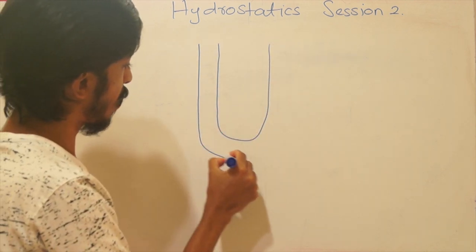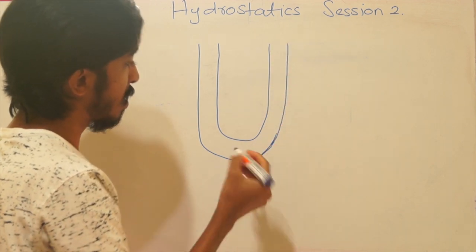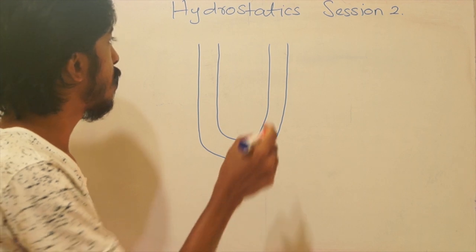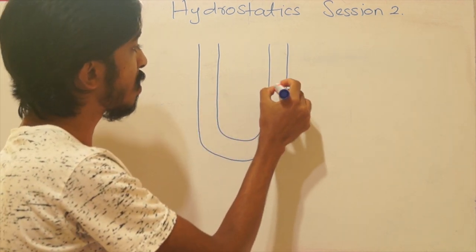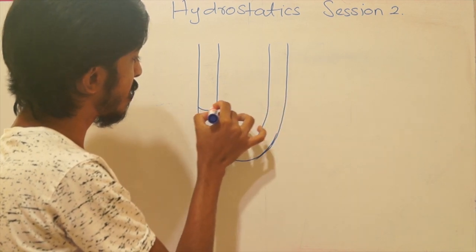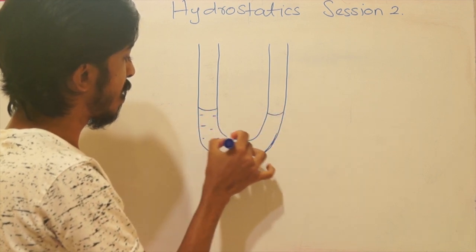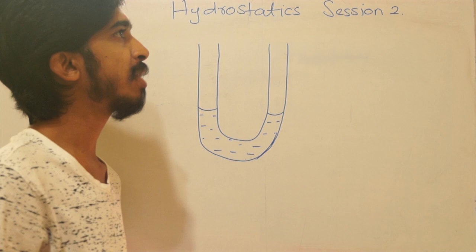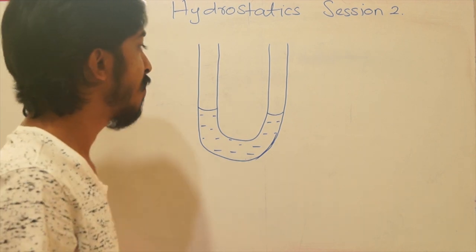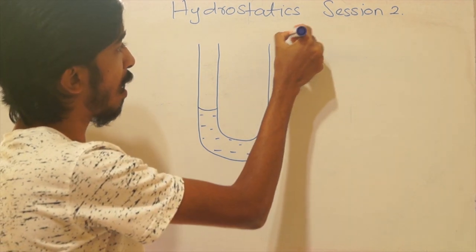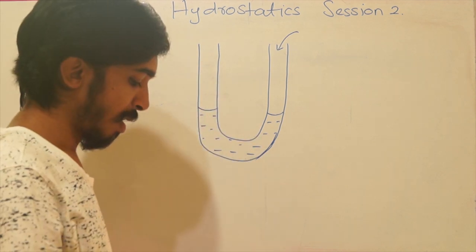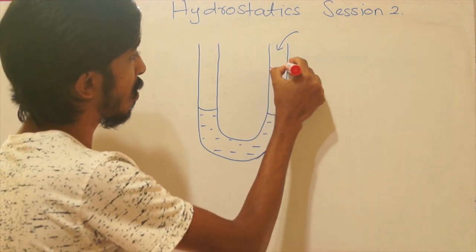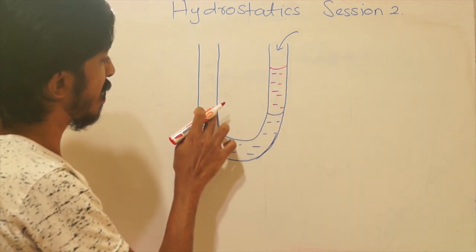For the standard solution we are using water. First we pour the water, the standard solution, and it will stay at the same level in the U-tube initially. Then we use a liquid with density lesser than water. If the density is lesser, when we pour it into one arm, there will be a height variation in the water column. Let's say it is poured up to this level, so there would be a variation in the water level.